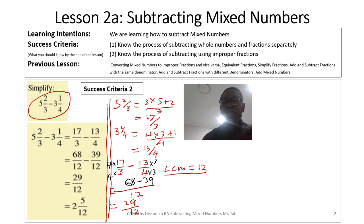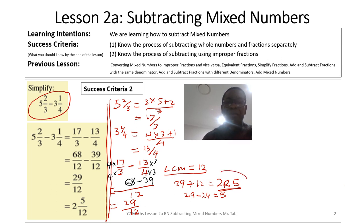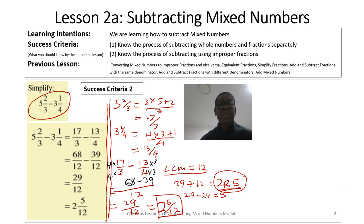The next question is: how many times does twelve go into twenty-nine? It goes two times — two times twelve is twenty-four. Then twenty-nine minus twenty-four gives us five, so we have two remainder five. Twenty-nine divided by twelve is two remainder five, which is the same as two and five over twelve. As you can see, the answer from the previous slide was also two and five over twelve.